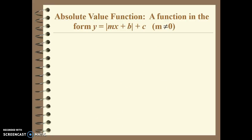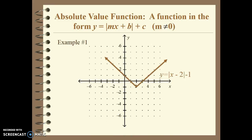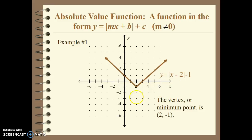Now we're going to look at the absolute value function. It's a function in the form of y equals the absolute value of mx plus b, plus c, where m is not 0. It's going to be a V-shape. For example, the absolute value of x minus 2, minus 1 — the vertex of this is at (2, negative 1). You can see the vertex, which is the bottom point, is at (2, negative 1).